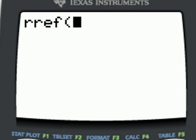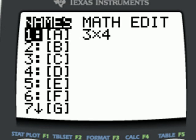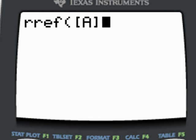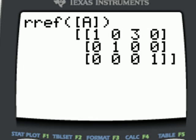Now we have to tell it which matrix to put into reduced row echelon form. So we hit second matrix, leave it on names and select the first matrix, which is matrix A. Close my parentheses and press enter.